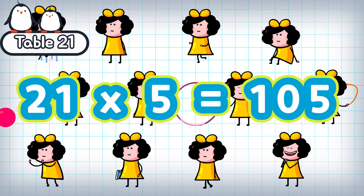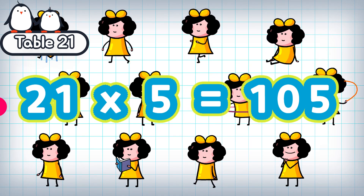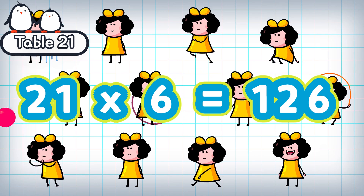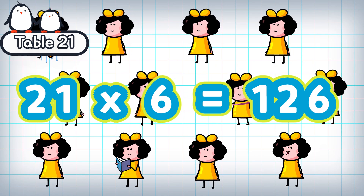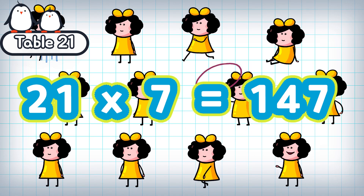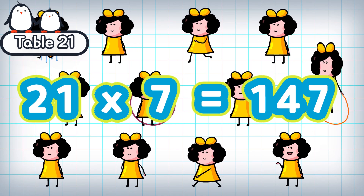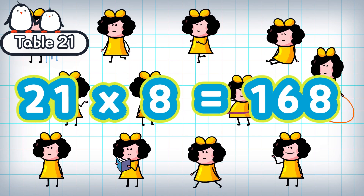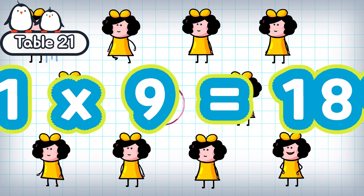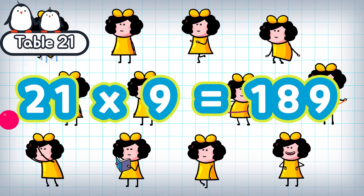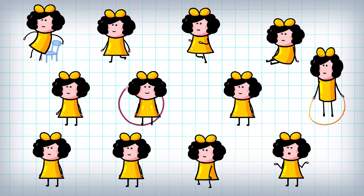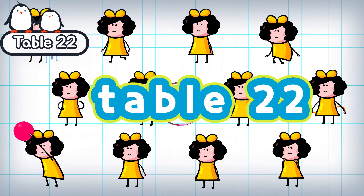21 times 5 is 105. 21 times 6 is 126. 21 times 7 is 147. 21 times 8 is 168. 21 times 9 is 189. Table 22.